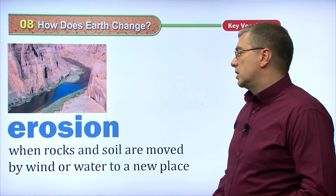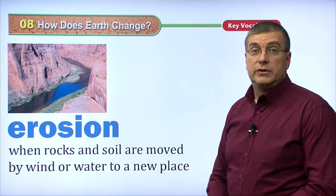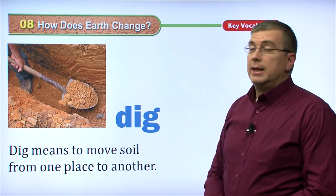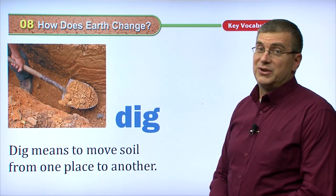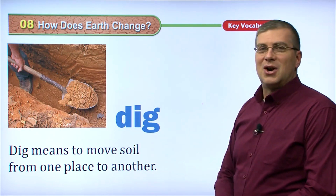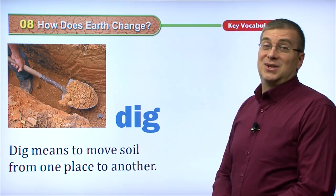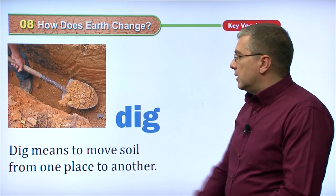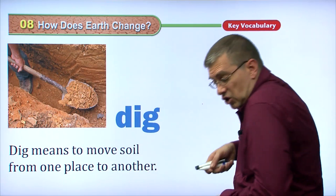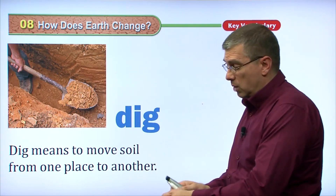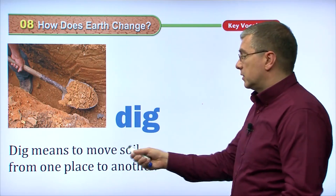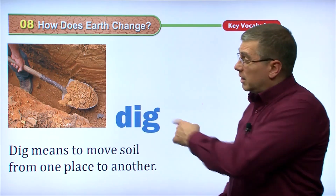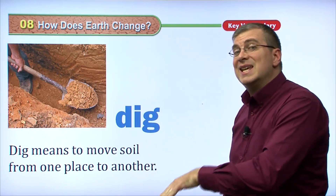And we call that erosion because basically the rocks are being moved. First, the rocks are being moved downstream, and second, the wind is blowing the rocks off the face of the cliff and smoothing out the sides of the cliff. Erosion: when rocks and soil are moved by wind or water to a new place. Now, we can also talk about the verb to dig. To dig means to move soil from one place to another. Usually human beings and animals will dig, but water, as we saw, can also dig into the ground.